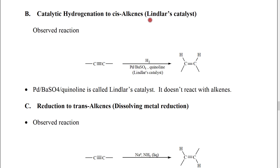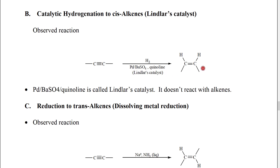Eventually, a scientist named Lindlar discovered that by taking palladium, absorbing it on barium sulfate, and adding a base called quinoline, he could catalytically hydrogenate an alkyne but have it stop at the alkene. Importantly, because of the mechanism of catalytic hydrogenation where the hydrogens add in a cis fashion, we end up with the cis alkene.